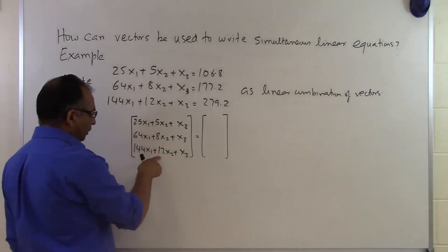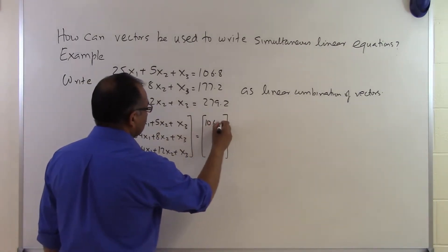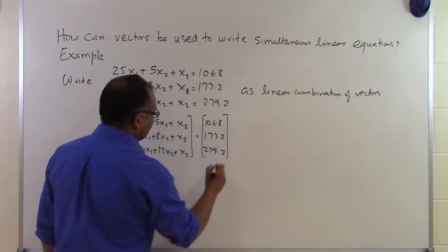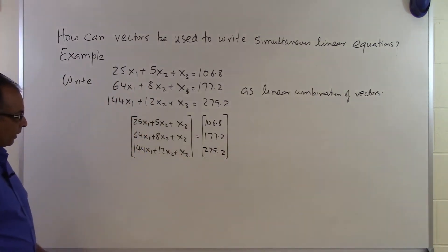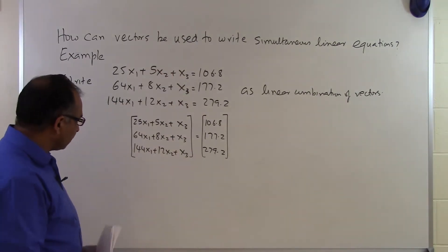And if I want this vector to be the same as what's here, then I will simply put the right-hand sides there: 106.8, 177.2, and 279.2. So that makes this vector the same as this vector based on these three equations right here.